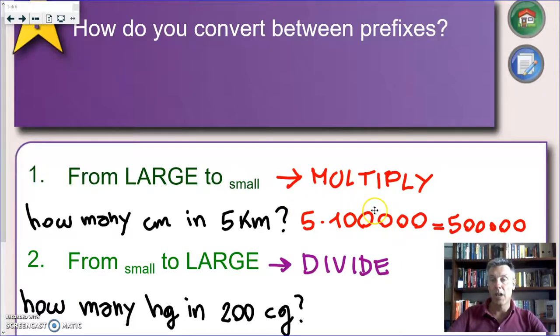So, you get five times a hundred thousand, five hundred thousand. So, your answer is five hundred thousand centimeters in five kilometers.